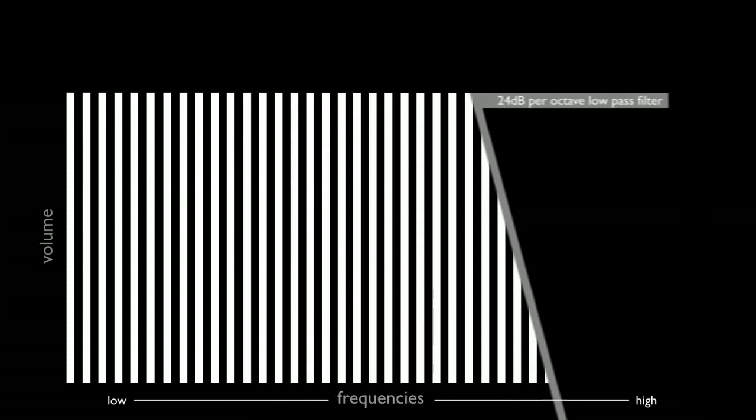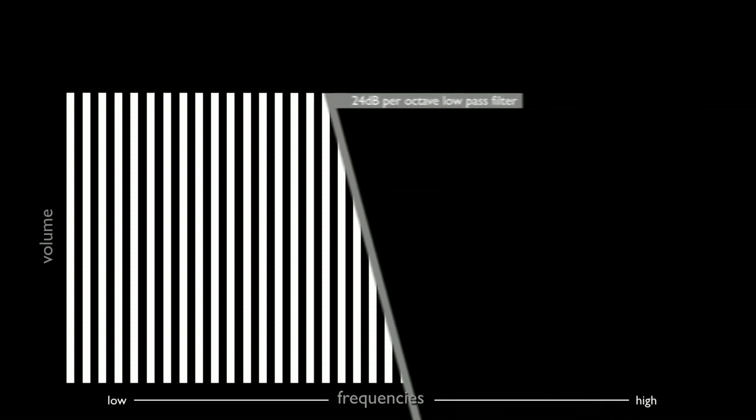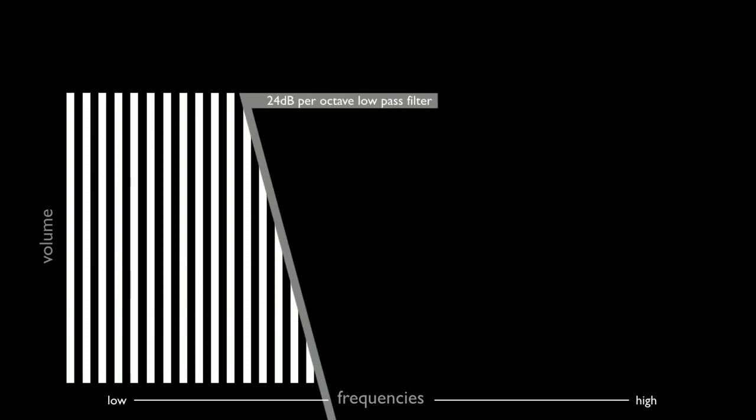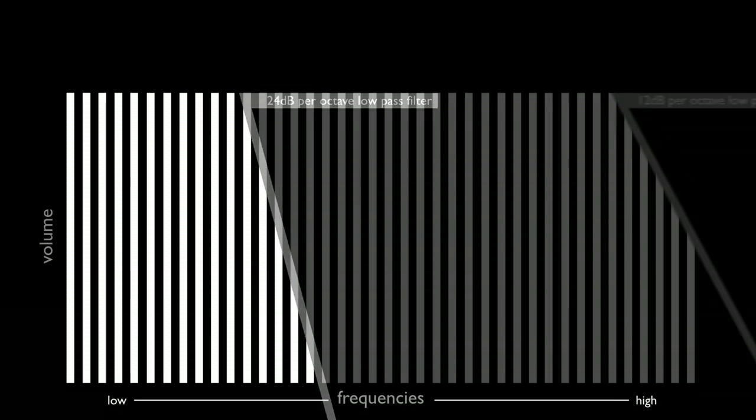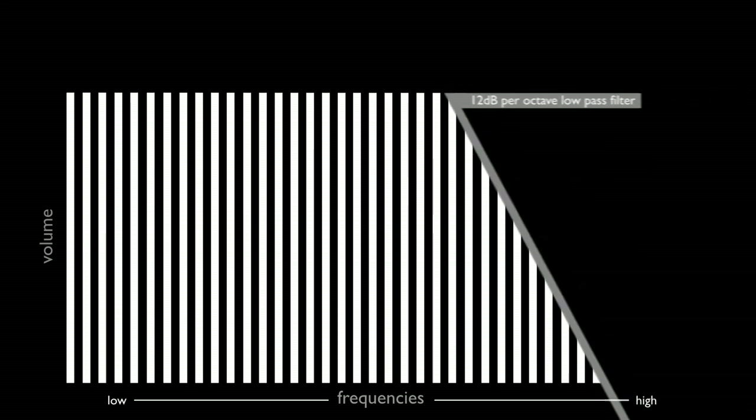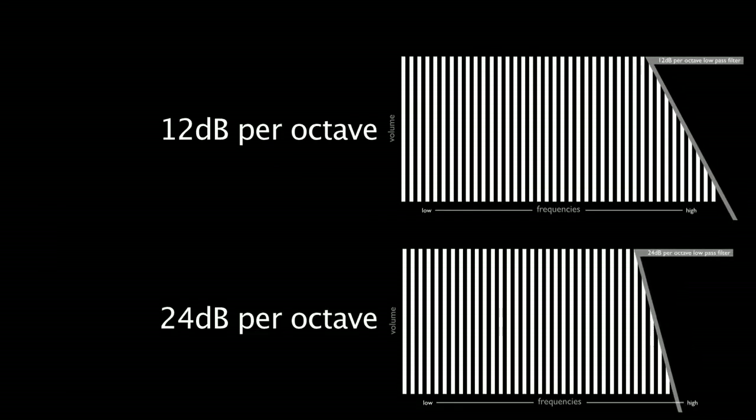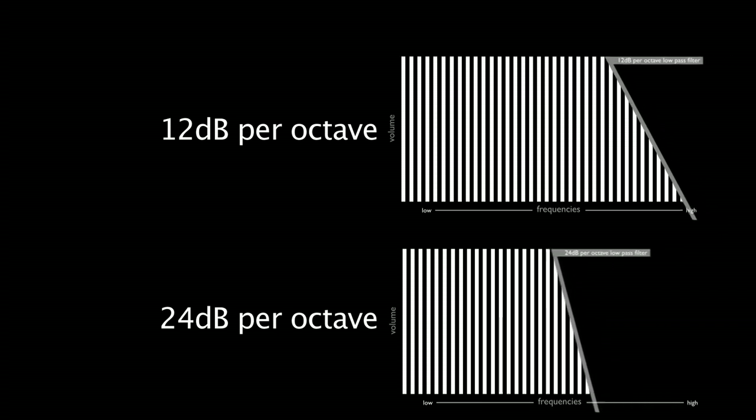24 decibels per octave is a steep slope. Fewer of the frequencies cut off are heard after they're cut off. So in the case of the low pass filter, you can hear relatively little of the frequencies above the filter cutoff point. 12 decibels per octave is a more gentle slope allowing more of the attenuated frequencies to be heard. Compare the angles of the angled bars of the 24 decibel per octave filter and the 12 decibel per octave filter and you'll see what I mean.